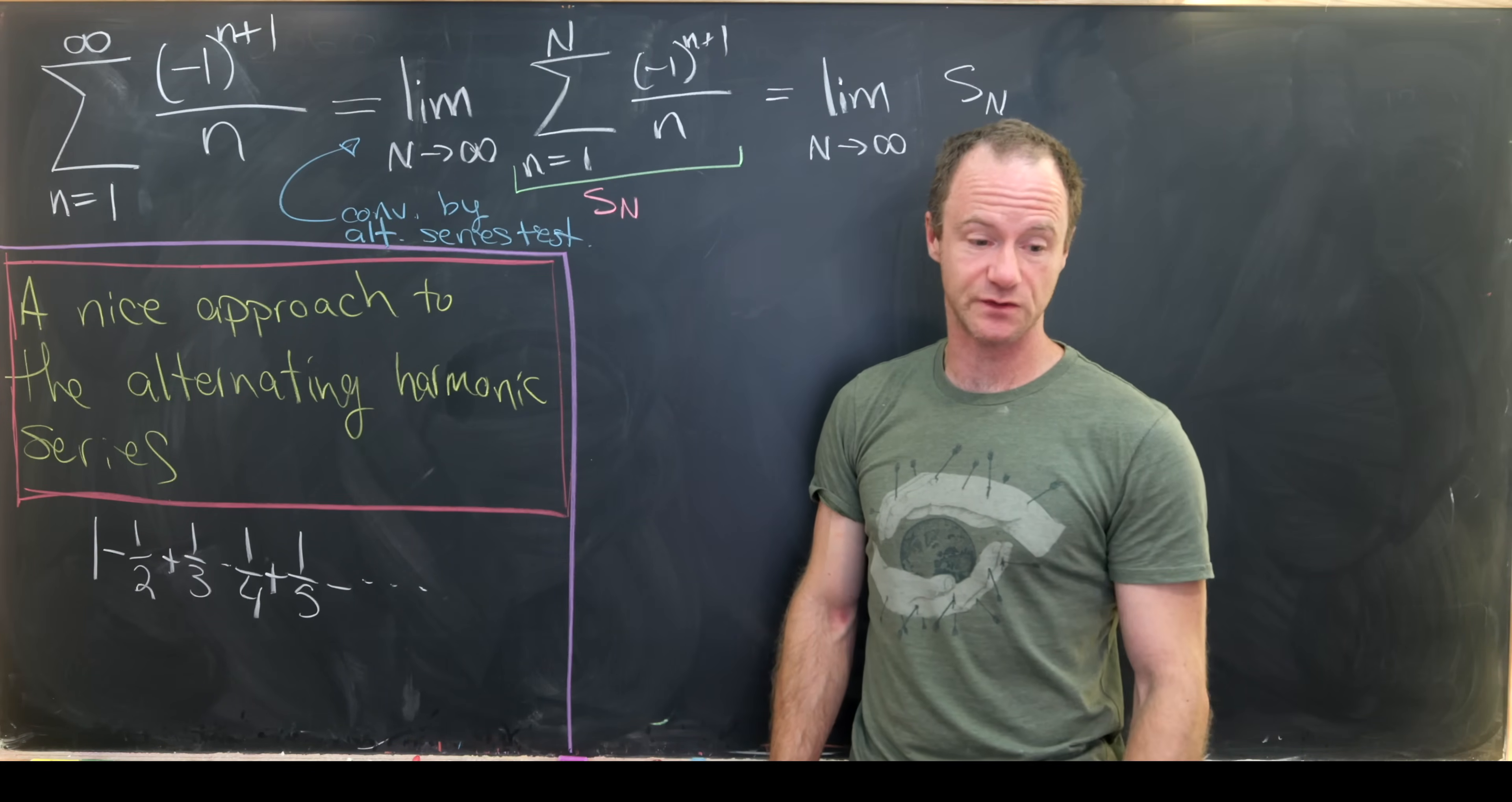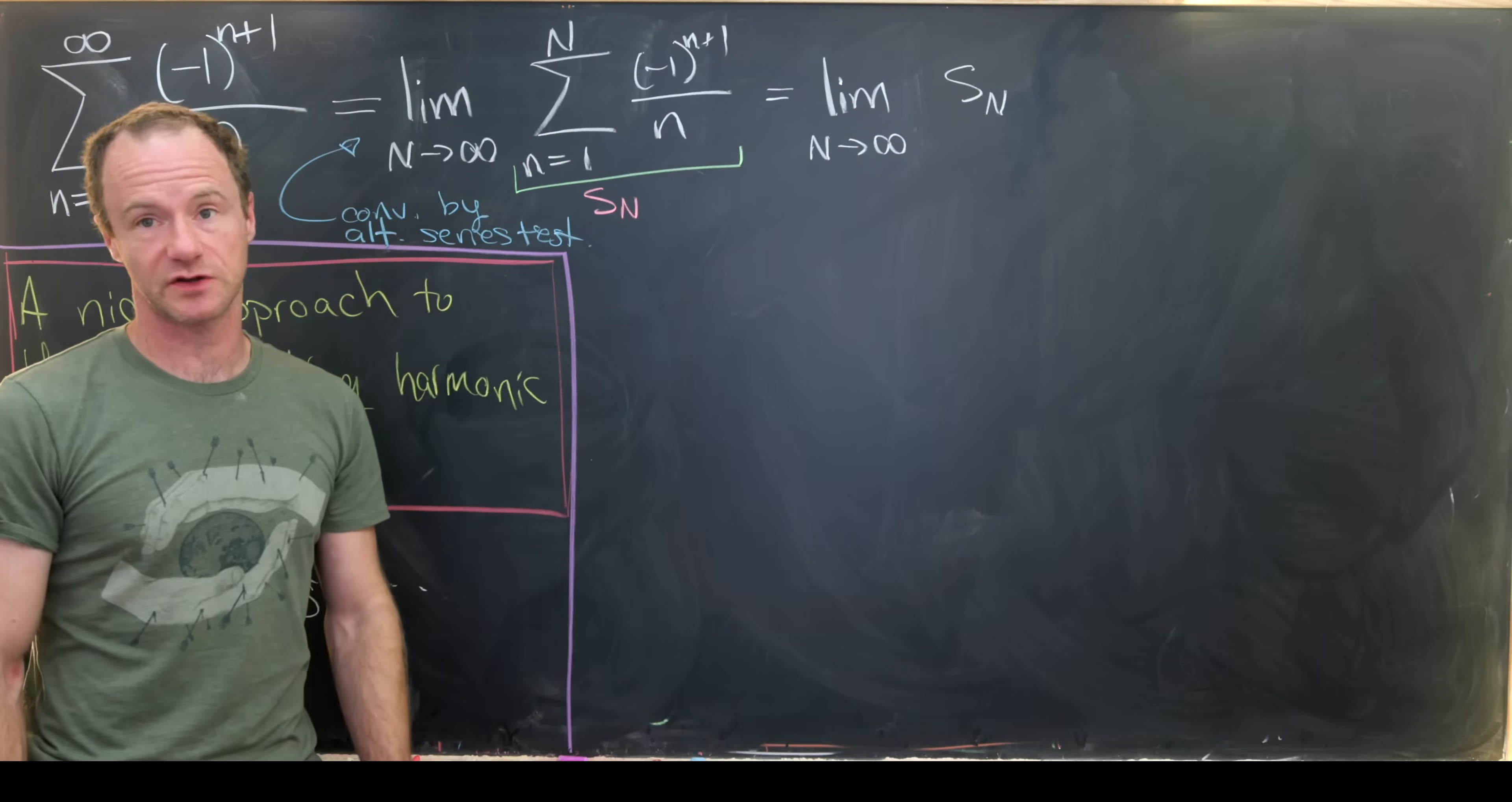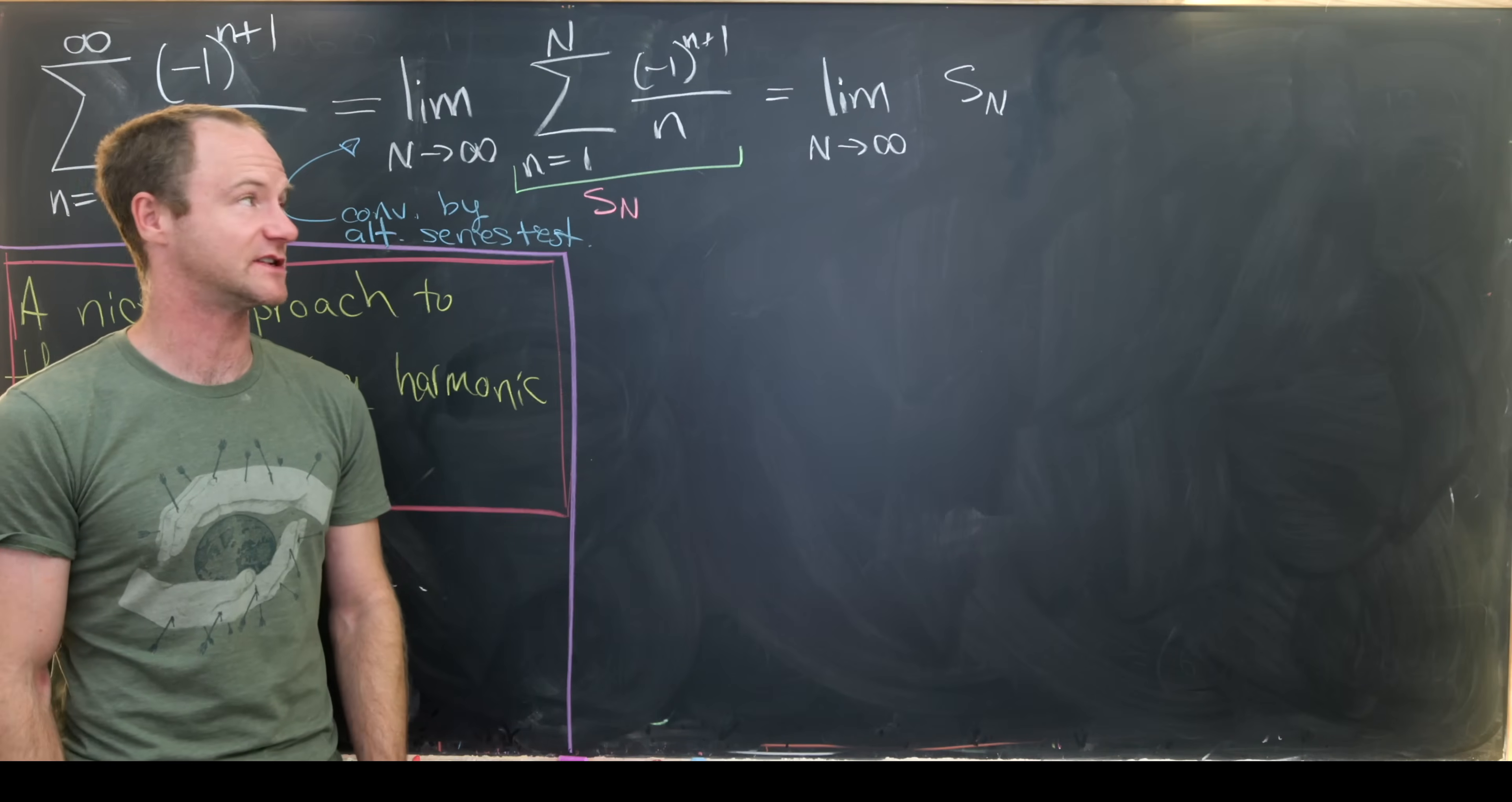And as well as it being an alternating series, the terms go to zero. And that's all you need for the alternating series test to work here. So this converges by the alternating series test. But then that means the sequence of partial sums converges by the duality between the sequence of partial sums and the series itself.